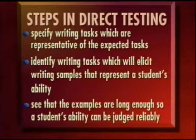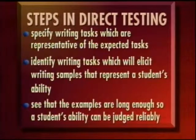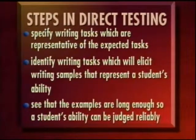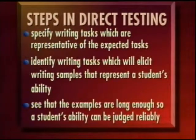Only three simple procedures need to be followed. First, specify writing tasks which are representative of the expected tasks — the course outline or syllabus gives this information. Second, identify tasks to elicit samples of writing which truly represent the student's writing ability. Third, see that the examples are long enough that from them the student's writing ability can be reliably judged.